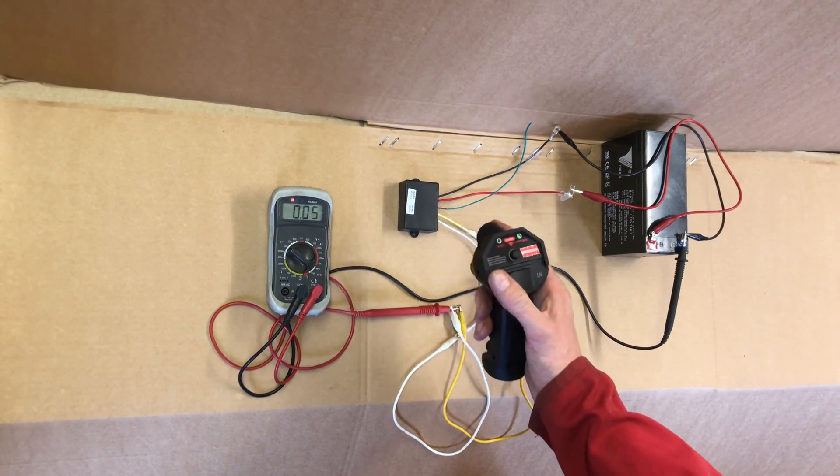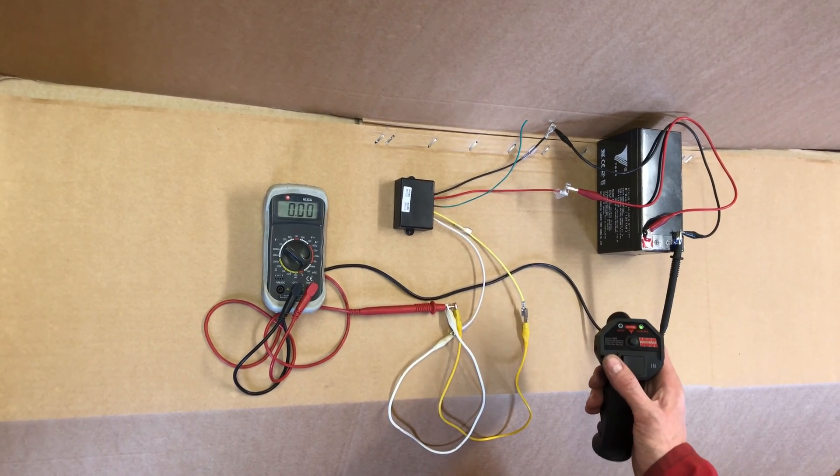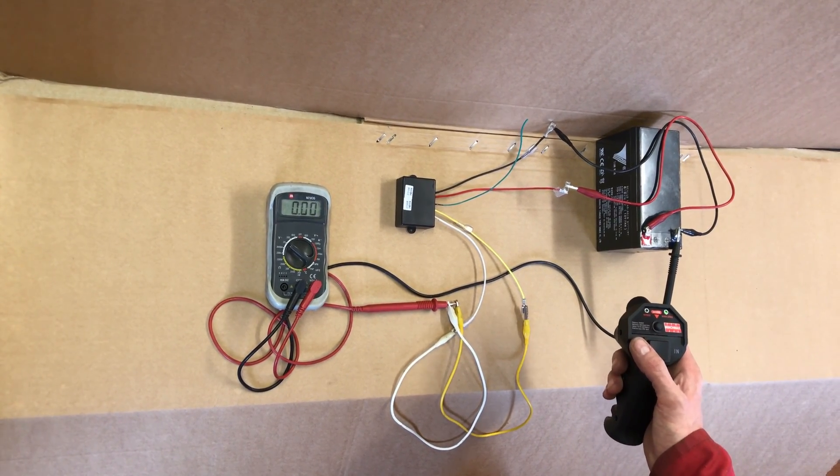If you've got those readings on the voltmeter, then you know that the remote is working as it should be.